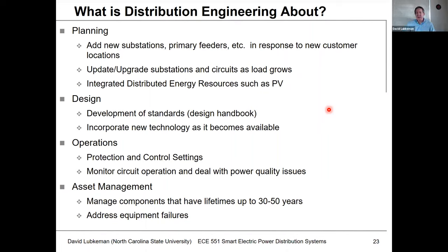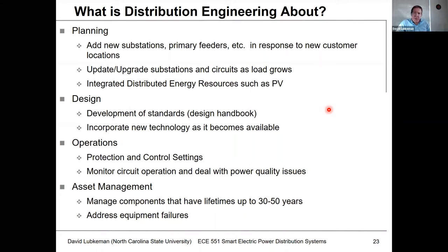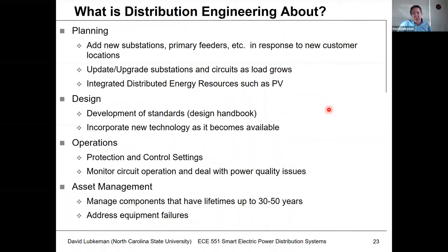Planning involves looking ahead — probably five to 30 years — to make sure distribution systems are going to hold up. Planners look at load growth and new loads, and try to figure out where new facilities, substations, and primary feeders need to go. Planning also comes into play when somebody wants to install distributed generation, which must coordinate with the existing system and loads. There are planning studies that determine whether a certain amount of distributed generation can be added at certain sites in the distribution system.